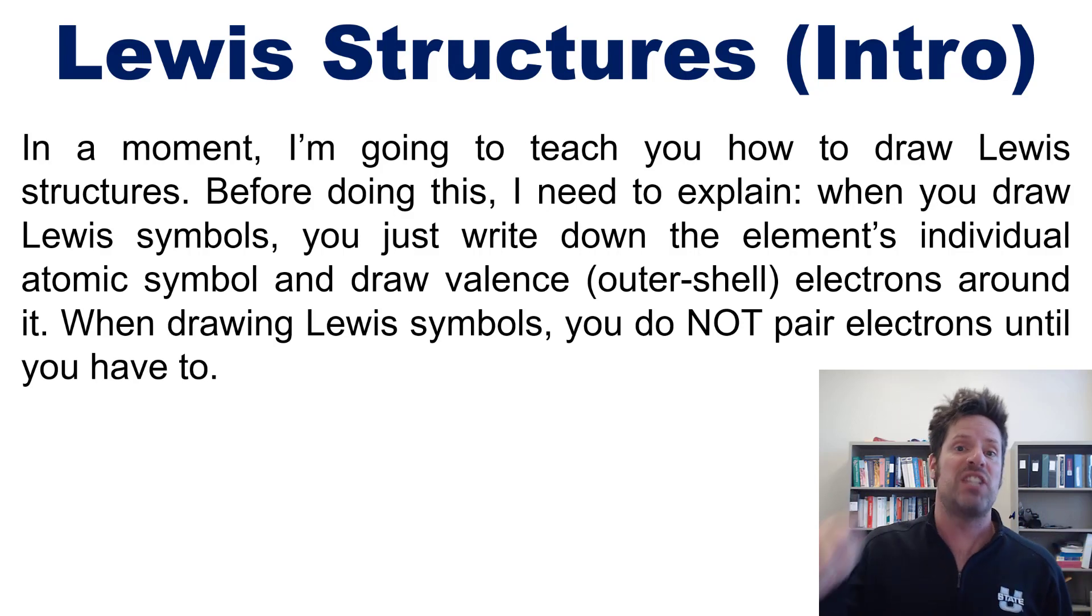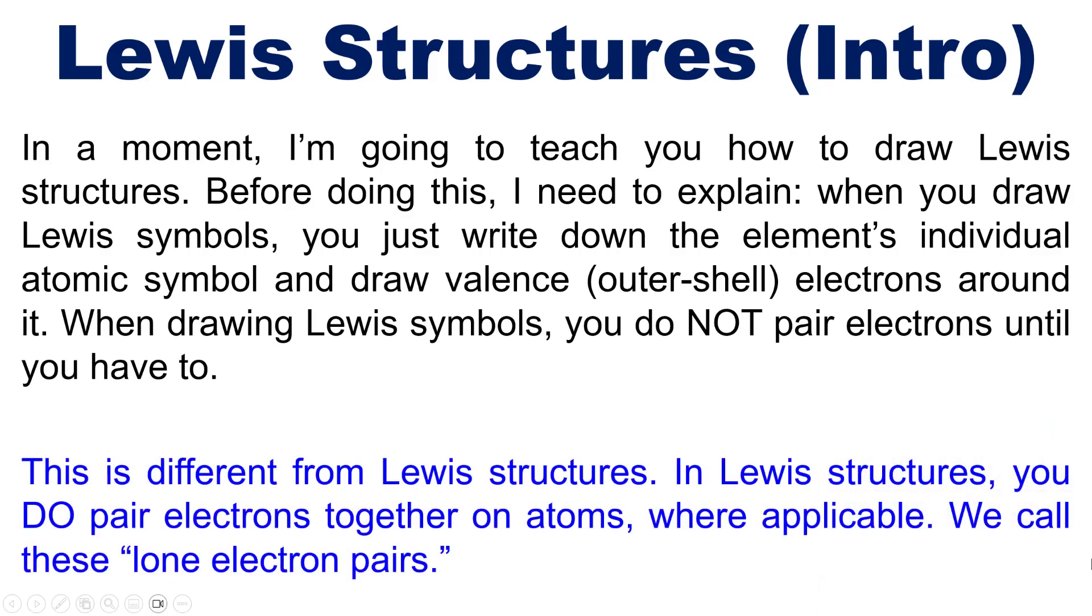When you draw Lewis symbols, like I just showed you, you just write down the element's individual atomic symbol and then draw valence, that is outer shell electrons around it. When drawing Lewis symbols, you do not pair electrons around the four sides of that elemental symbol until you have to. Now this is different from Lewis structures. In Lewis structures, you actually do pair electrons together on atoms whenever that is applicable. We call these paired electrons on atoms lone electron pairs, or sometimes lone pairs for short.